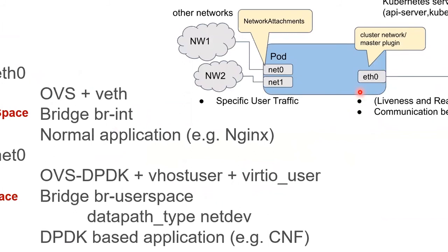However, the user space CNF plugin cannot support normal applications because it bypasses the Linux networking stack. To support both CNF and normal applications, Multus should be used. Multus is an open-source CNI plugin developed by Intel. Normally, pods in Kubernetes only have one interface, but Multus can create multiple interfaces for pods. Multus creates configuration files for other CNI plugins and then calls those plugins to create the interfaces.